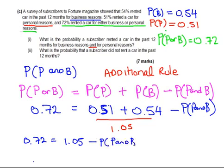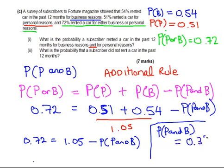So, it's a very simple calculation now. We can just rearrange that formula. What's the difference between 1.05 and 0.72? The answer is, I'll write it down here, probability of P and B equals 0.33, 33%. So, that's the first question.